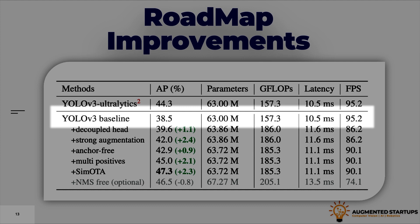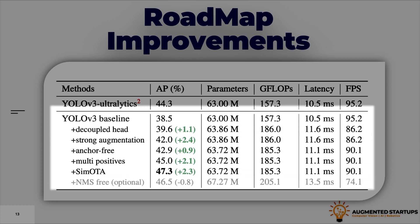When they combined these key components, they saw significantly improved results. Decoupled head boosted the performance by 1.1%. Augmentation techniques that we discussed earlier helped the network to boost its performance by 2.4%. Using the anchor-free mechanism helps the model's average precision to increase by 0.9% and other techniques like multiple positives and SimOTA boosted the performance by 2% each.